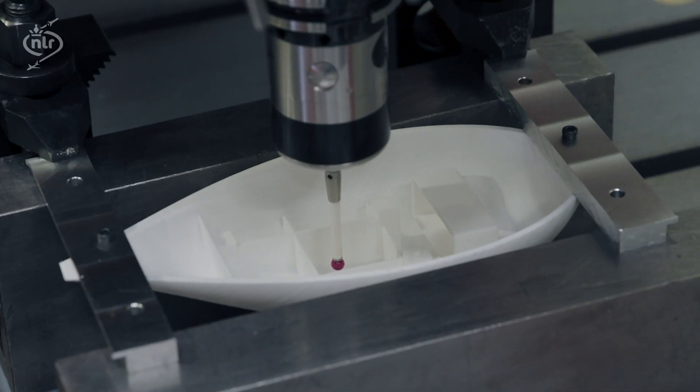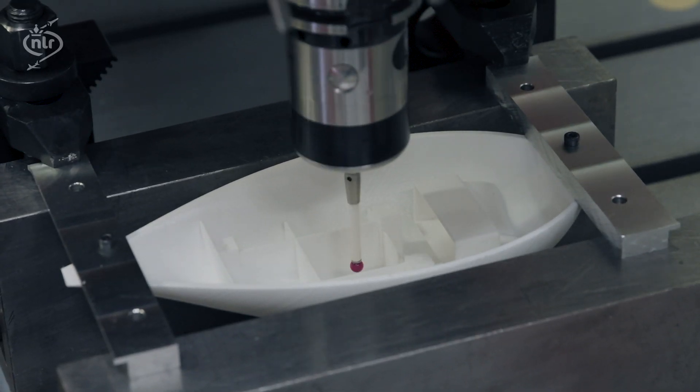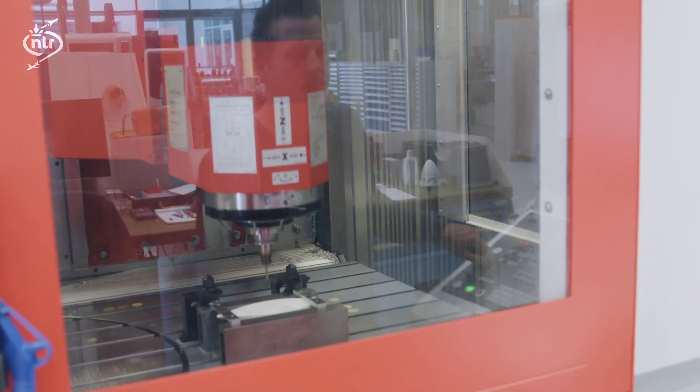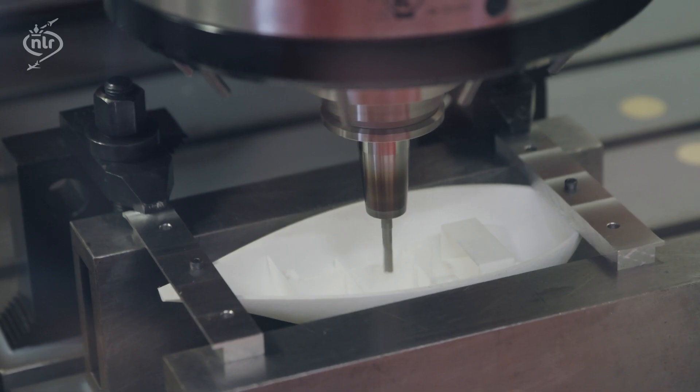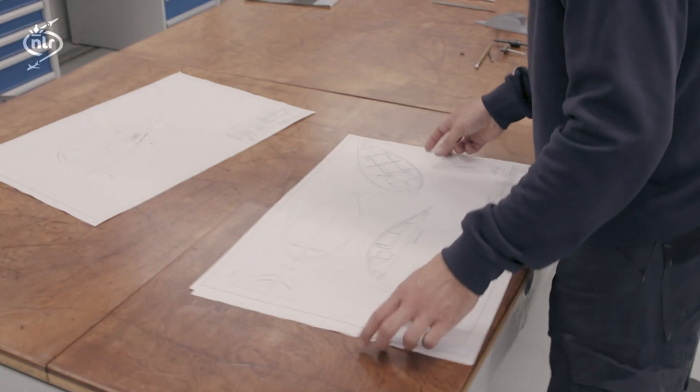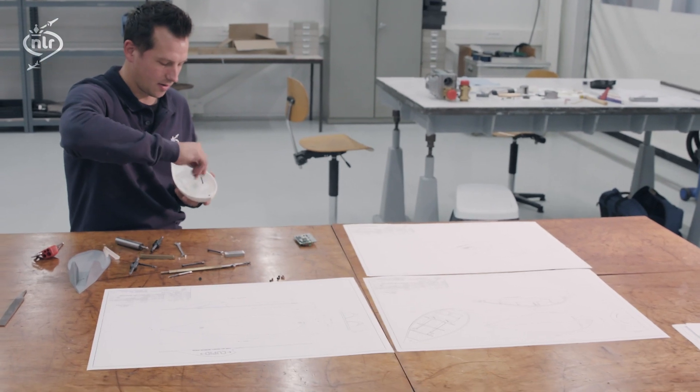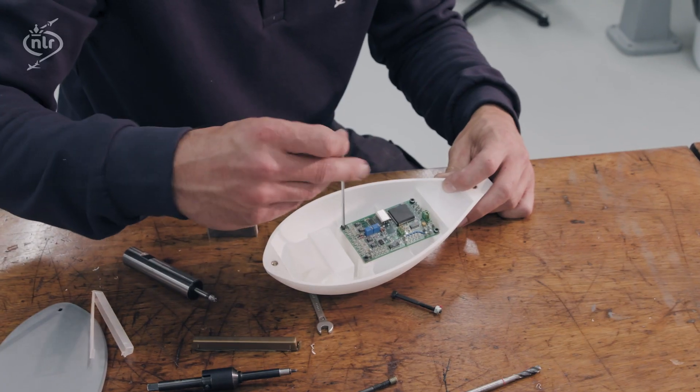During the development of a product, it is not always necessary to have the complete and finished product to do a proper test. It may suffice to use a scale model. Sometimes, extra instrumentation may be needed to perform a test. Sensors can be built in without affecting the tests themselves.